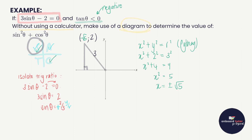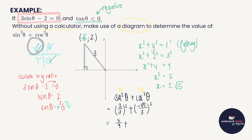Now I can answer: sin²theta + cos²theta. Sin = y over r = 2 over 3, cos = x over r = −√5 over 3. Squaring each: (2/3)² + (−√5/3)² = 4/9 + 5/9. The negatives cancel when squared, and root 5 times root 5 equals 5. With a common denominator of 9: 4 + 5 over 9 = 9 over 9 = 1. A beautiful answer.